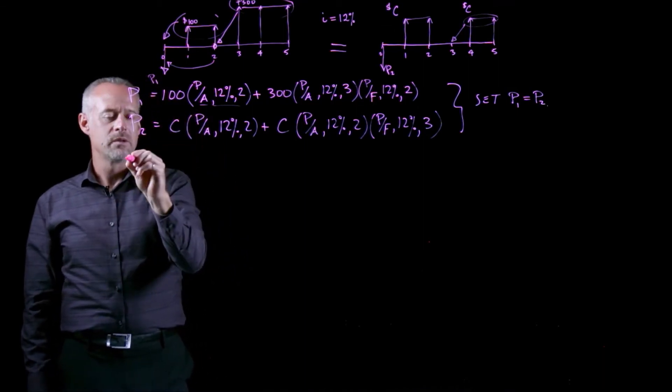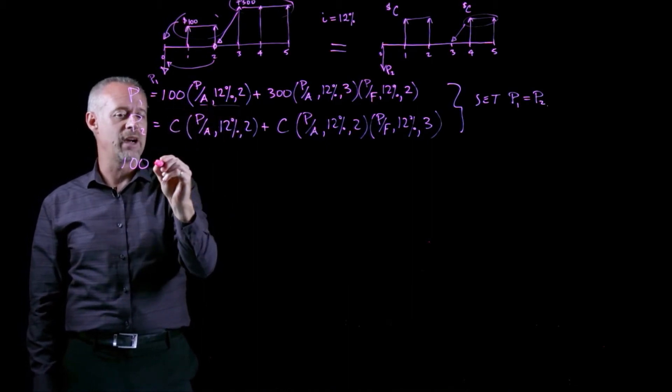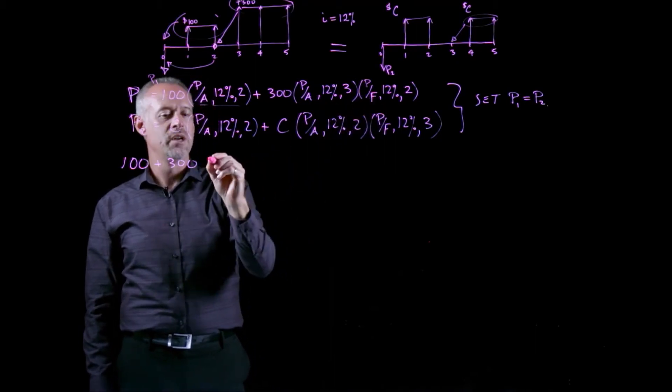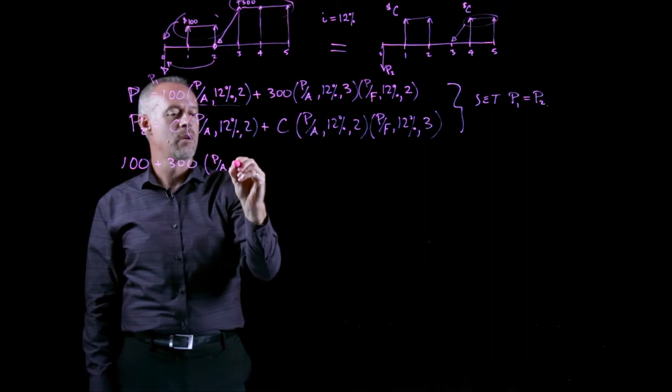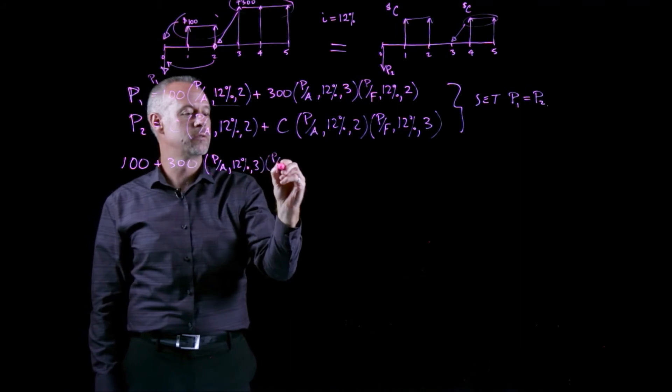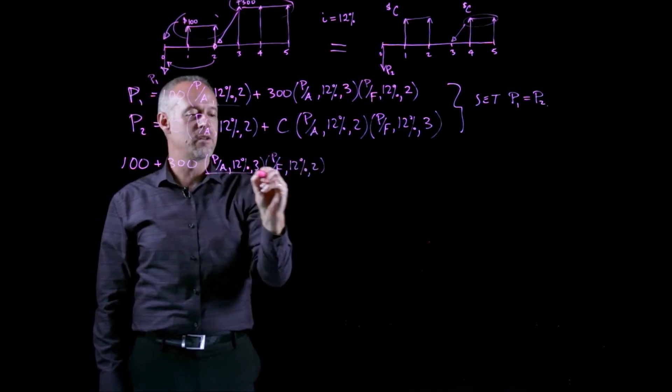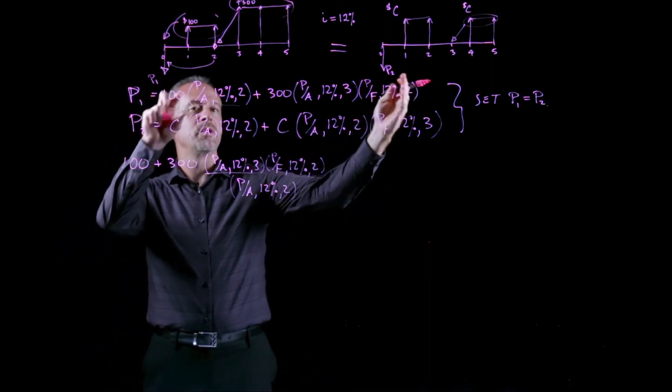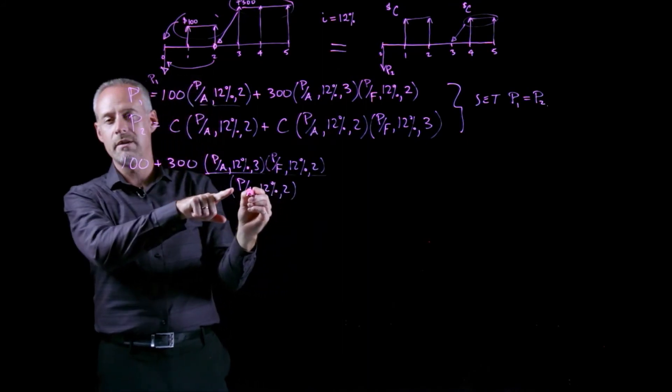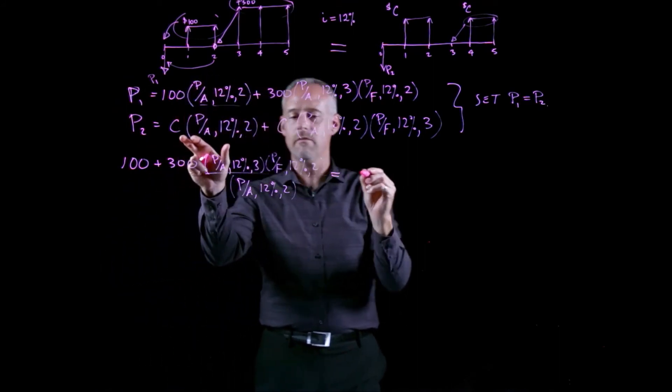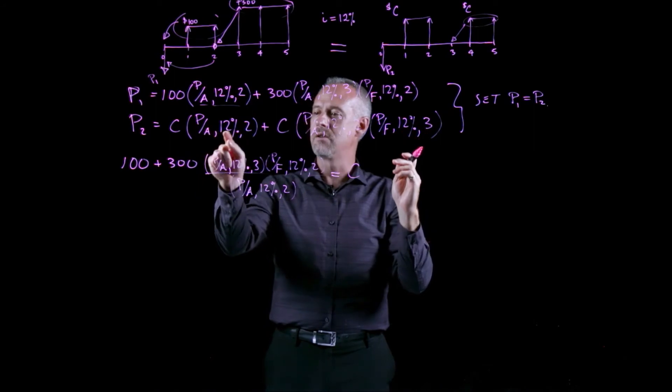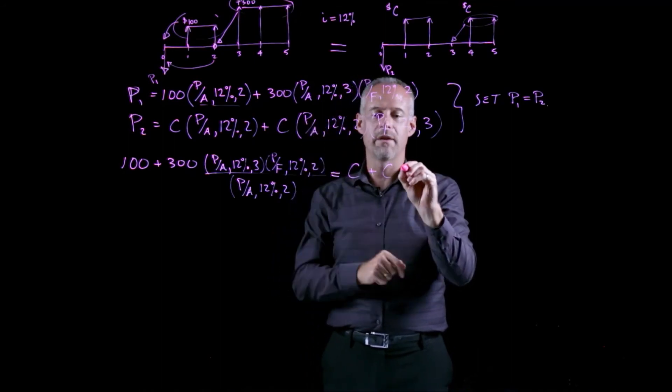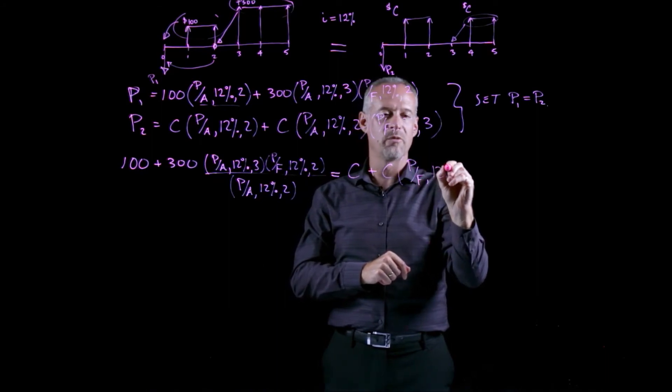I'll first look at the P1. So the P1 would simply become 100 if I divide through by that factor plus 300 times, well, I actually don't have the P given A factor for 12 and 2, I have the P given F, so I'd end up still having all of the same factors in this part of the expression. And then I would actually be dividing by the P given A at 12% and 2. So that's this expression with each of these terms divided by the P given A, 12% and 2, and that's going to be equal to C, so again, this expression with the P given A, 12% and 2 divided through, plus C times, that's going to disappear because I've divided through by that, P given F at 12% and 3.